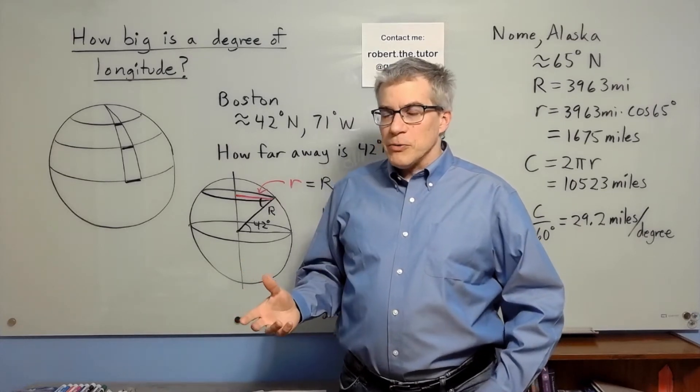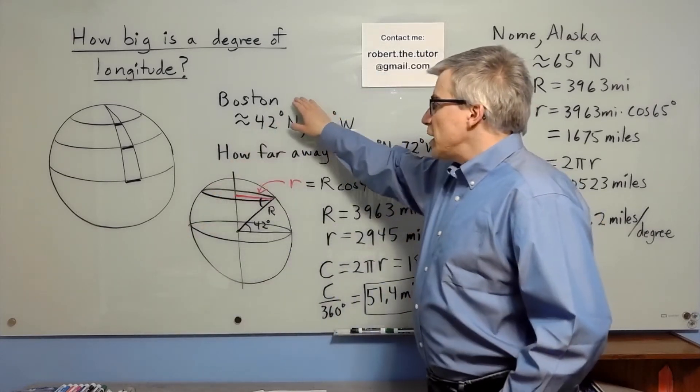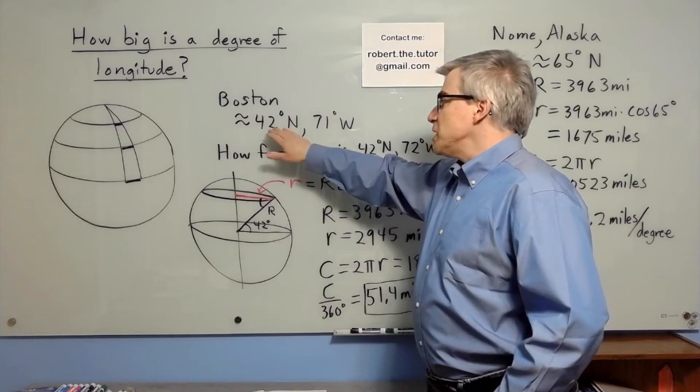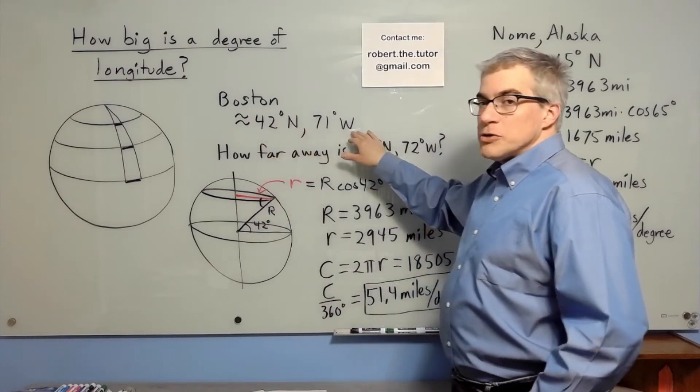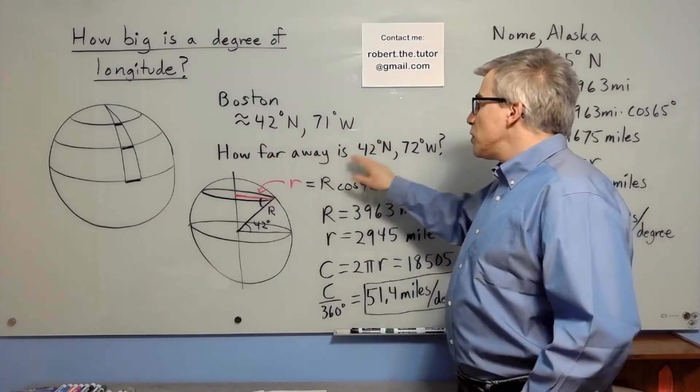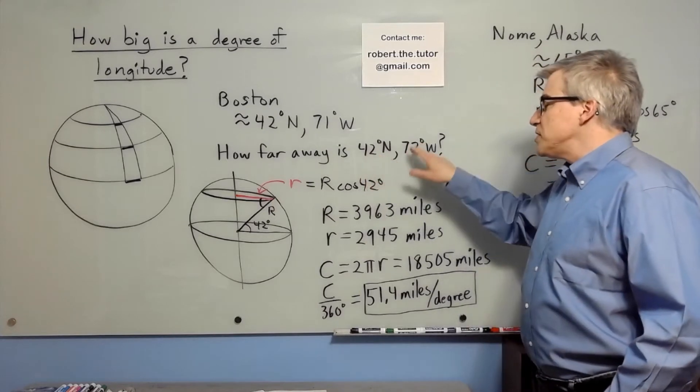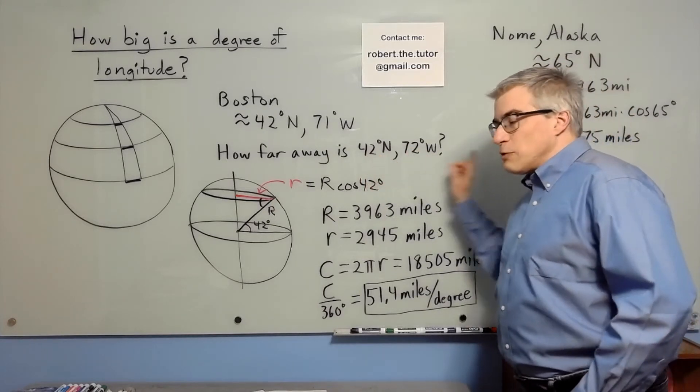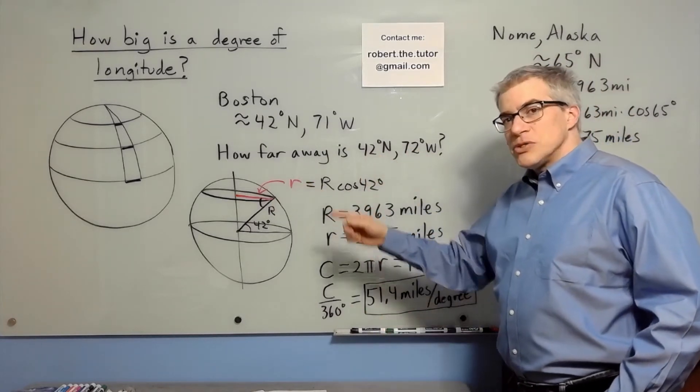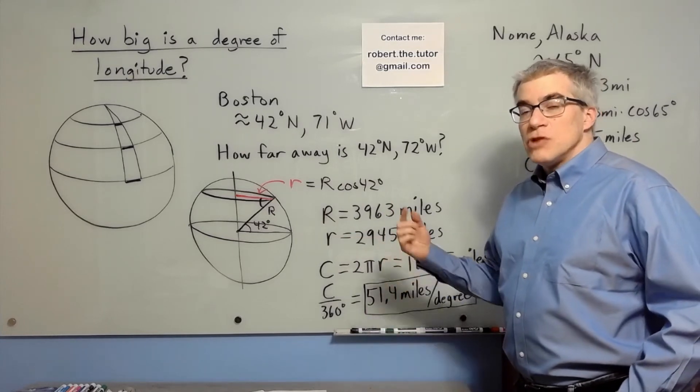So how do we figure it out? Suppose we have Boston which is very approximately 42 degrees north, 71 degrees west. How far away is 42 degrees north, 72 degrees west? How far west, how many miles, is one degree of longitude?